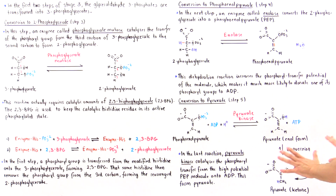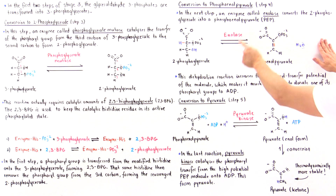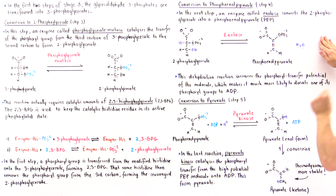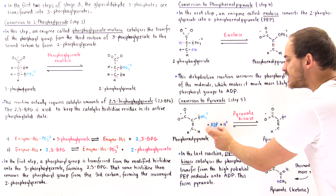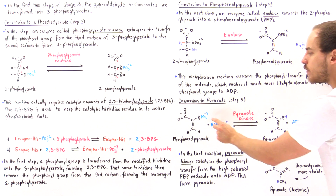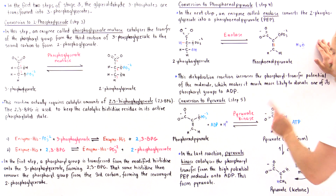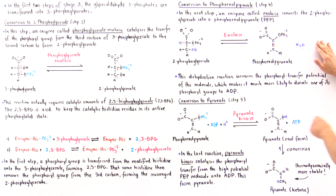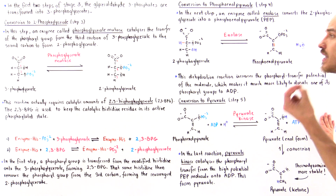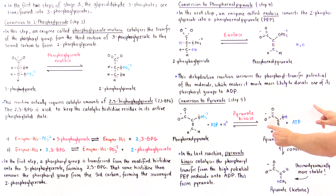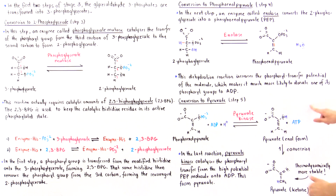This reaction takes place because PEP has a very high phosphoryl transfer potential — even higher than ATP. In the presence of ADP, the phosphoryl group is transferred onto ADP, and in the presence of an H+ ion, the oxygen receives the hydrogen. This forms pyruvate in the enol form along with ATP. Since the enol form is less stable, it spontaneously and quickly converts into the more stable ketone form of pyruvate.